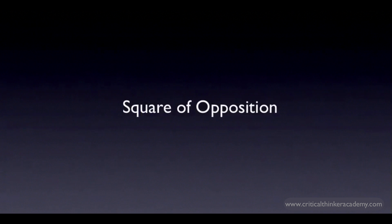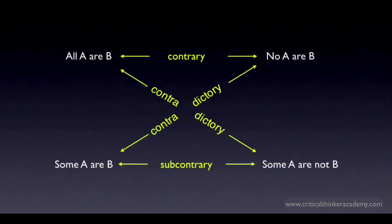Here is a handy diagram that might help some of you memorize the contradictories of the different categorical forms. This diagram is sometimes called the square of opposition. It's not a complete version of the square of opposition that shows up in most textbooks — I've left off some of the relationships since we haven't talked about them. But it captures at a glance the contradictories of the categorical claims that use all, some, and no.